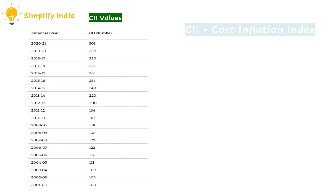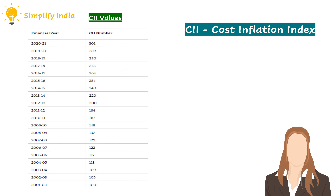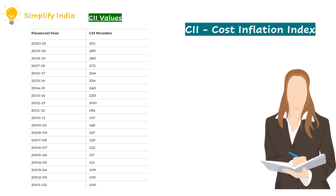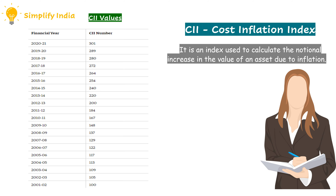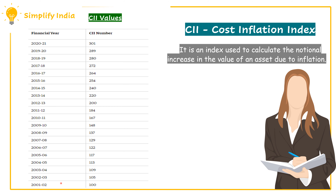Now, let us learn what CII values are, which we have used in the calculation of index cost of improvement and index cost of acquisition. CII values is an index used to calculate the notion of increase in the value of an asset due to inflation. Here, we have listed out different CII values for their respective years, which we have to utilize in the calculation of capital gains.